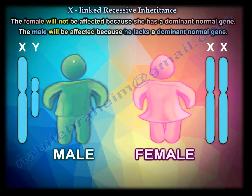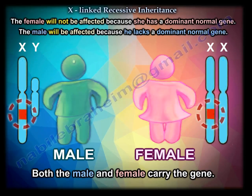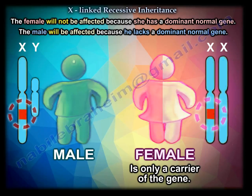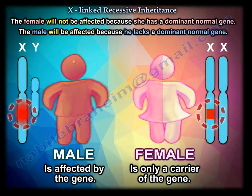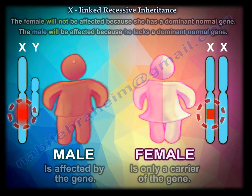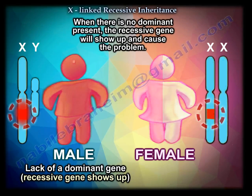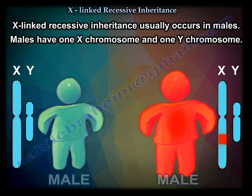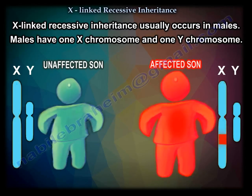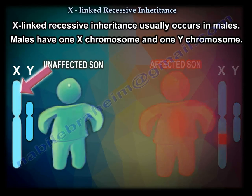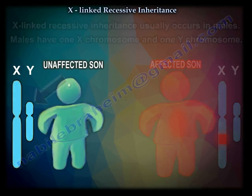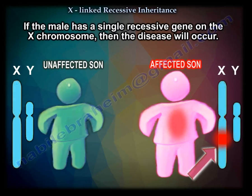Take an example: a male and a female. The male carries the gene, and the female carries the gene. The female will not be affected because she has dominant normal genes. The male will be affected because there is no dominant normal gene present. When there is no dominant gene present, the recessive gene will show up and cause the problem. So X-linked recessive diseases usually occur in males — the male has one X and one Y chromosome, and if he has a single recessive gene on that X, the disease will occur.